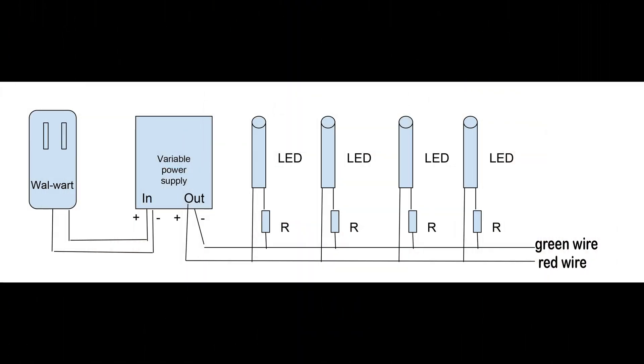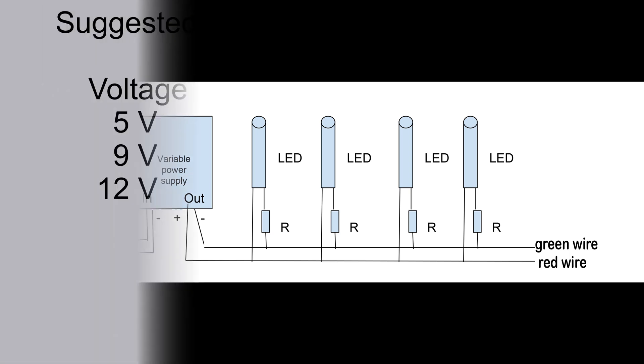Now we put it all together. The wall wart powers the variable power supply and that in turn goes to the red and green wire and those are wired to the LED light sticks. You can have several light sticks for all of your buildings. If your wall wart is rated at 1 amp and each of your light sticks pulls 20 milliamps or less, you can have at least 50 of these wired together on your layout.